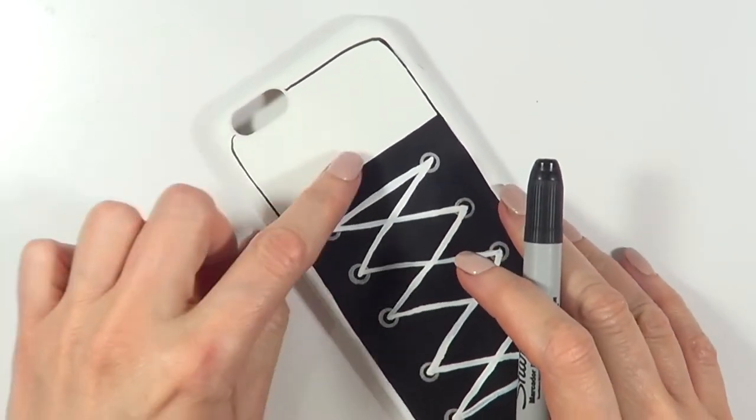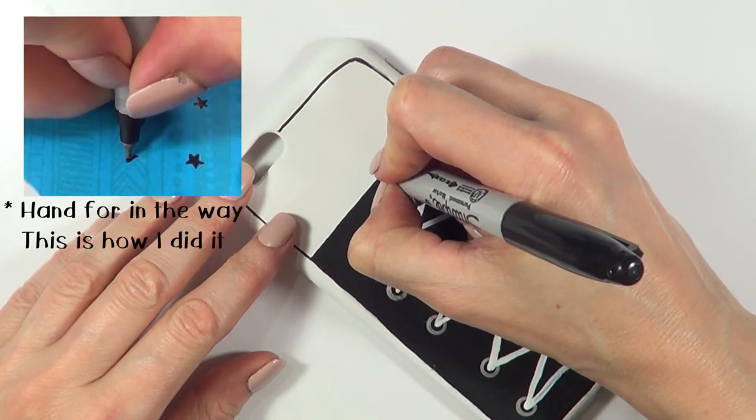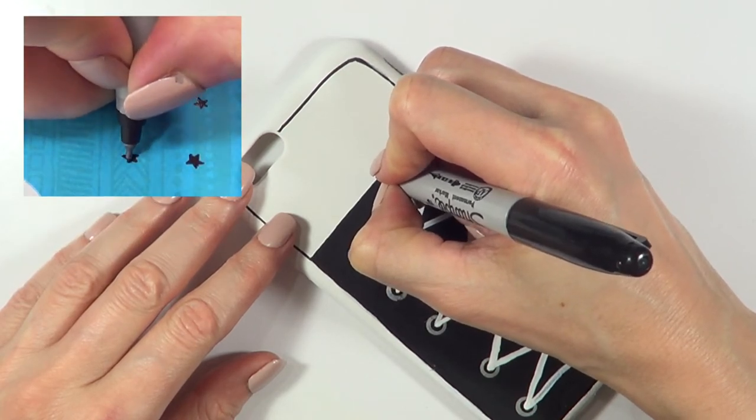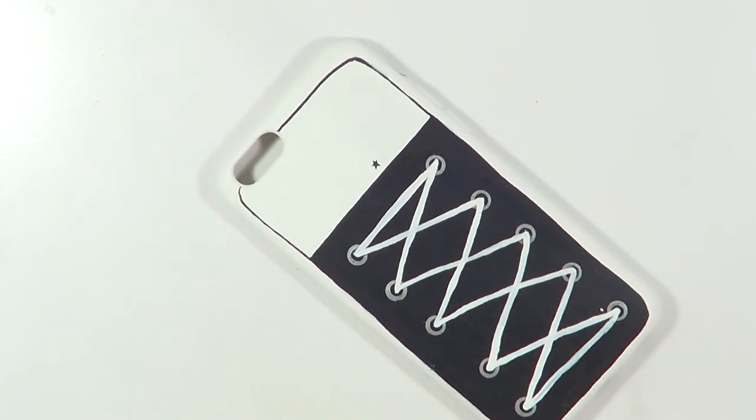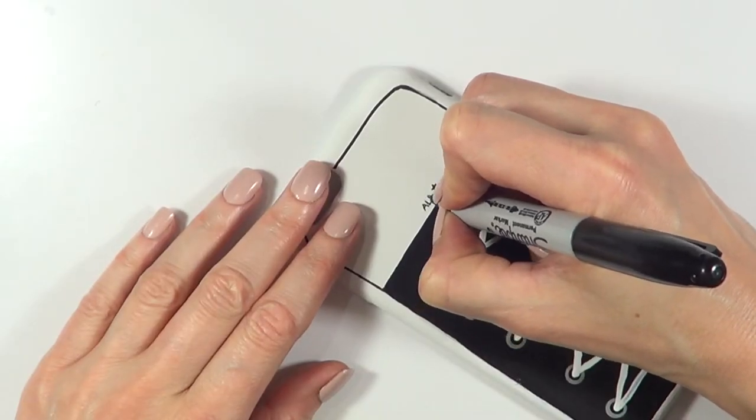And then I felt like I needed something else, so I just grabbed my Sharpie again. This time I'm going to be using the finest tip and I'm going to be drawing a star—a tiny star—and then I'm going to be writing 'All Stars.'